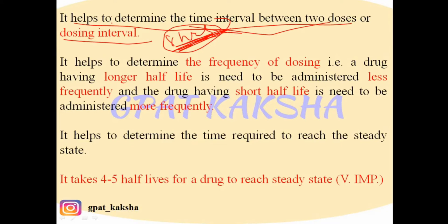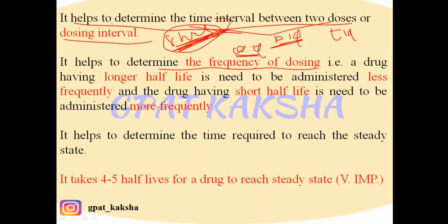Half-life also helps determine the frequency of dosing — how frequently a drug should be taken: once a day, twice a day, or thrice a day. These prescriptions are written as OD (once daily), BID (twice a day), or TID (thrice a day). These dosing frequencies are determined from the half-life of the drug.